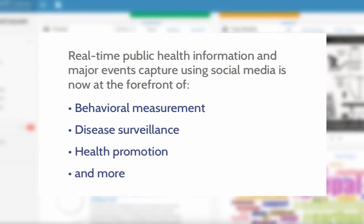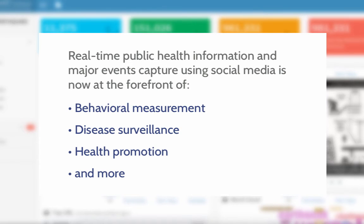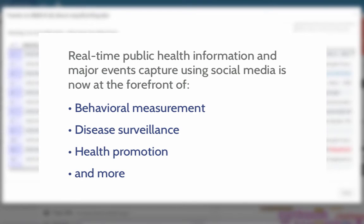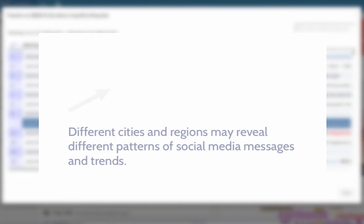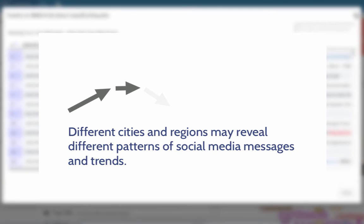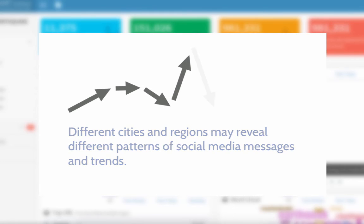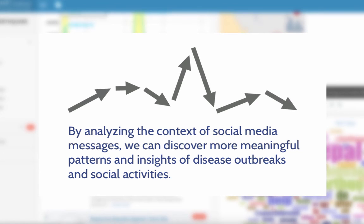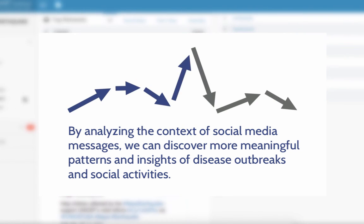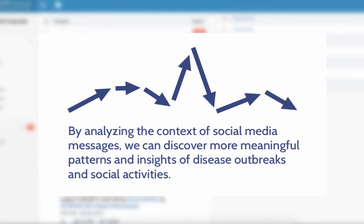Real-time public health information and major events captured using social media is now at the forefront of behavioral measurement, disease surveillance, and health promotion. Different cities and regions may reveal different patterns of social media messages and trends. By analyzing the context of social media messages linking place and time together, we can discover more meaningful patterns and insights of disease outbreaks and social activities.